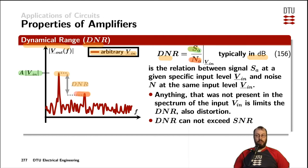Therefore, in the best case, the dynamical range is the same as the signal-to-noise ratio, which is rarely the case as we have artifacts like clipping or crossover distortion.